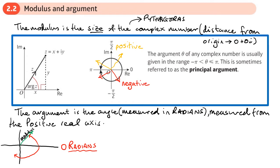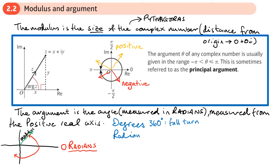As we go around the bottom we have a negative argument. Now, with degrees we know that a full turn is 360 degrees. But in radians, 2π — and we use a little 'c' to show we're doing radians, not degrees — is a full turn.